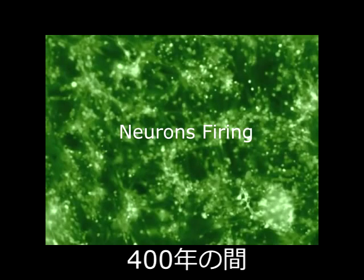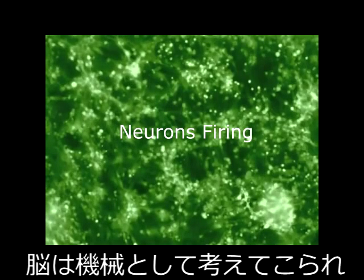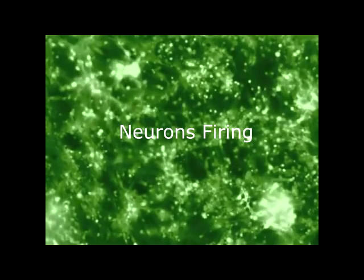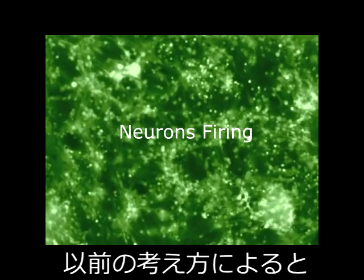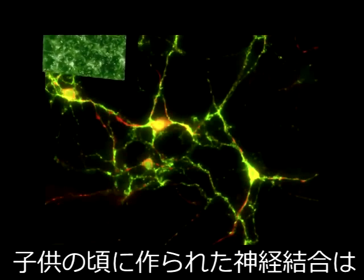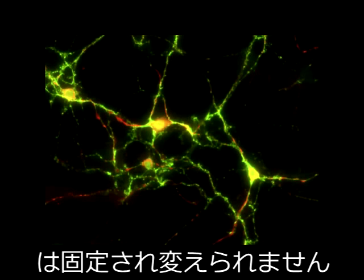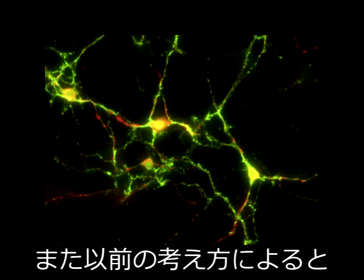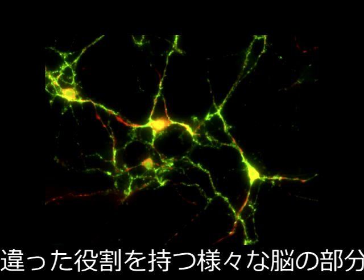For over 400 years, the brain was depicted as a machine with parts that were fixed. The previous concept of the brain suggested that neural connections you formed as a child were fixed and could not change. The previous belief also stated that the different areas of the brain, which are zoned at birth for different purposes,